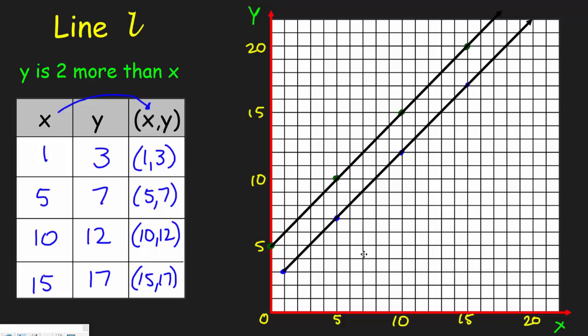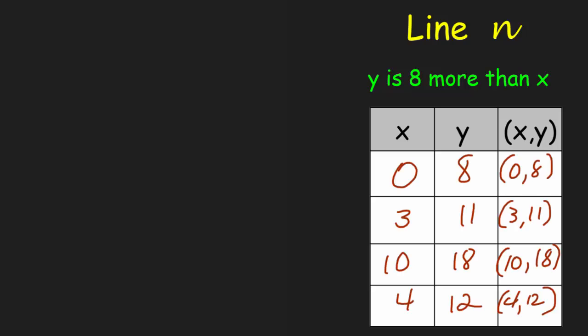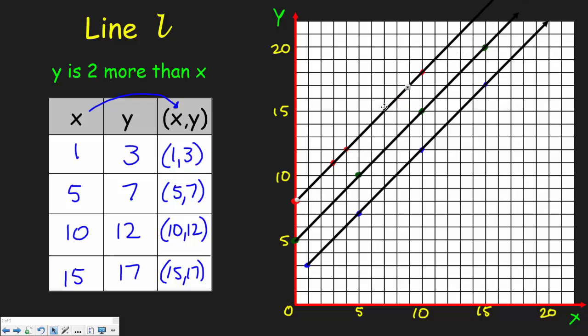Let's add one more line — Line N. The rule states y is eight more than x. Comparing that to Lines L and M, it's another addition rule, but this time we add eight to x. The rule adds six more to x than Line L, and three more than Line M. Let's make a prediction: will Line N be parallel? I bet Line N will be above the other two on the plane. Let's generate four points and plot them.